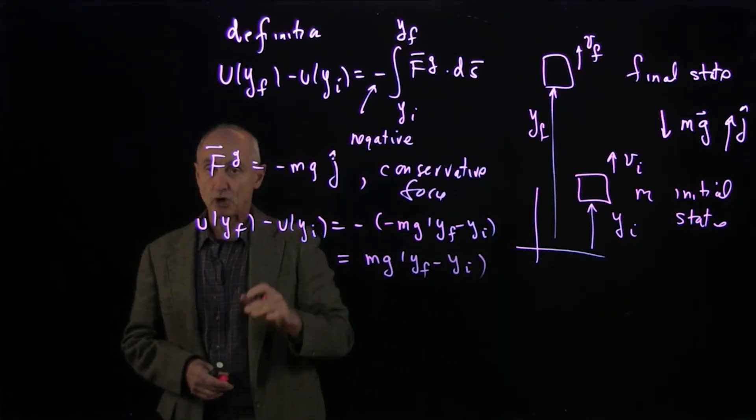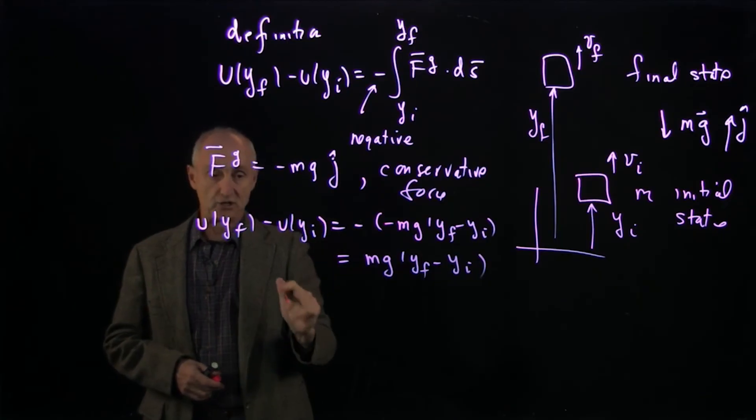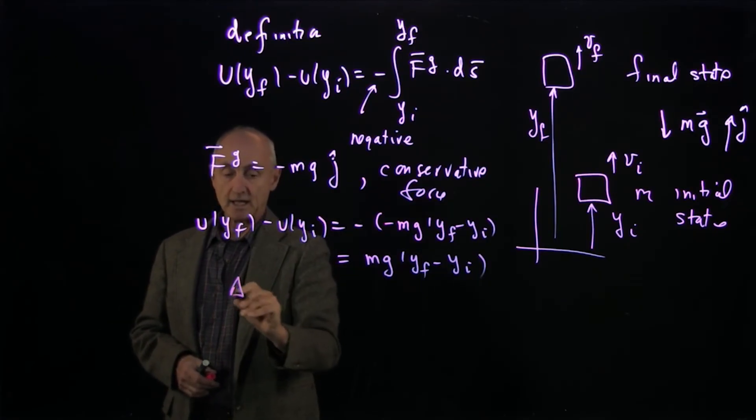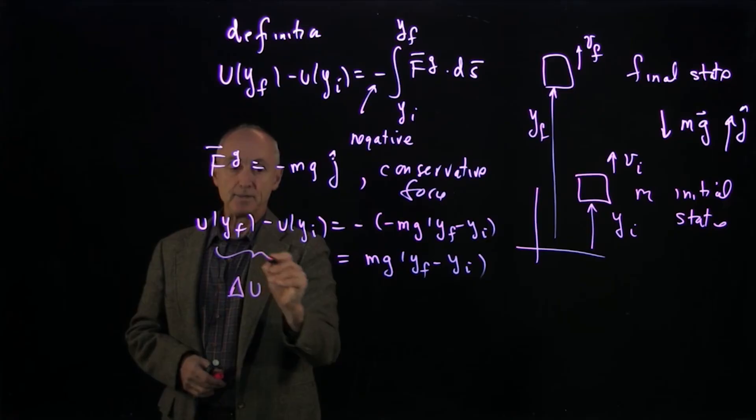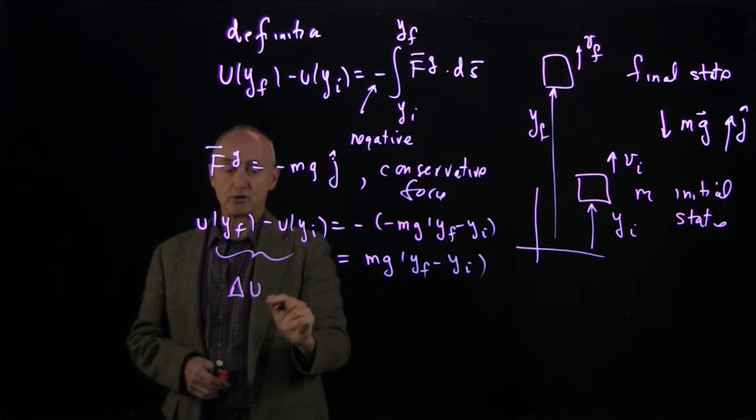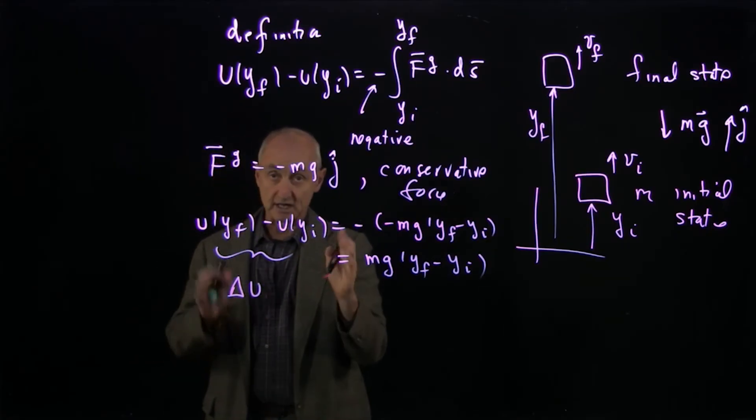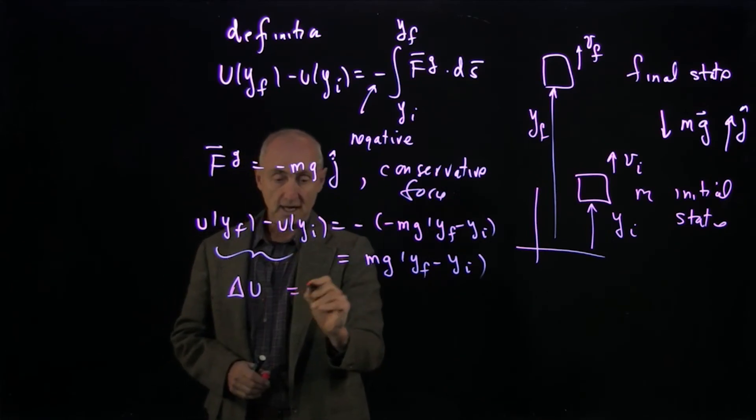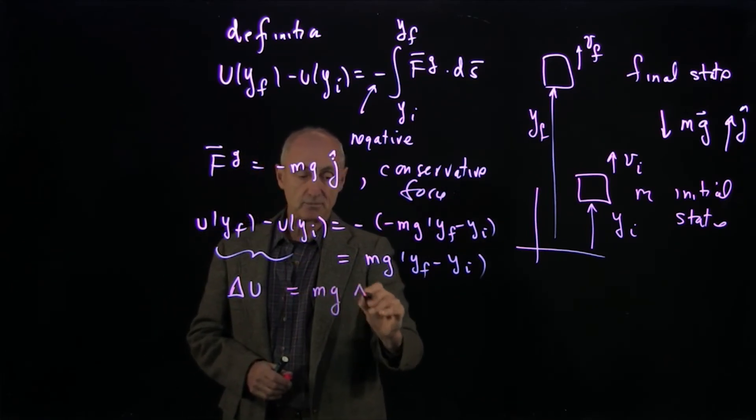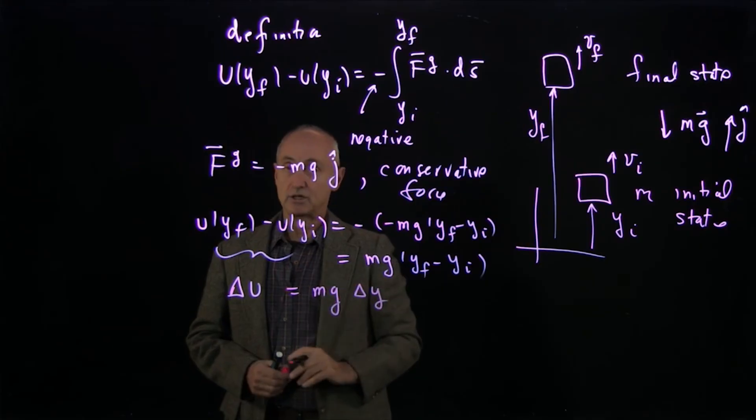Now, many times people talk about changes in potential energy. So when I write delta U, I mean precisely the potential energy at the final state minus potential energy of the initial state, the change in potential energy. And that's equal to mg times the change in the displacement.